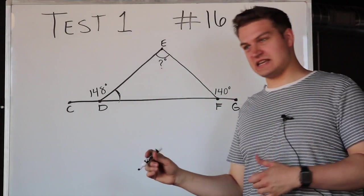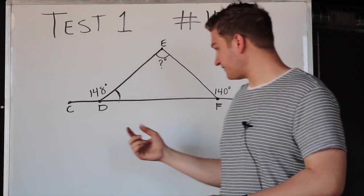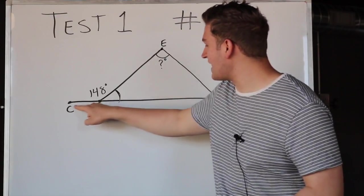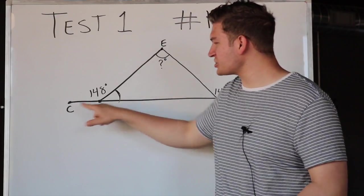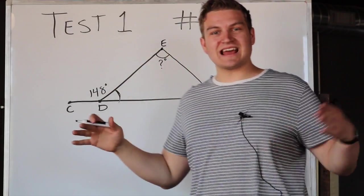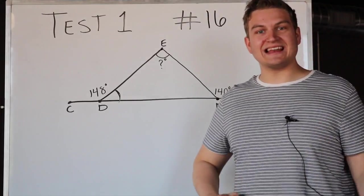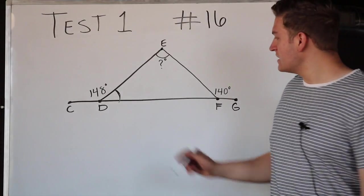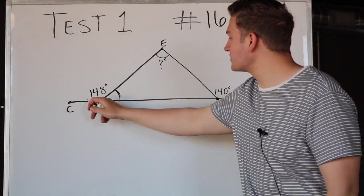In order to find angle EDF, we have to know that since this is a straight line right here, this angle 148 plus this angle must add up to 180 degrees. So this whole thing has to be 180 degrees.